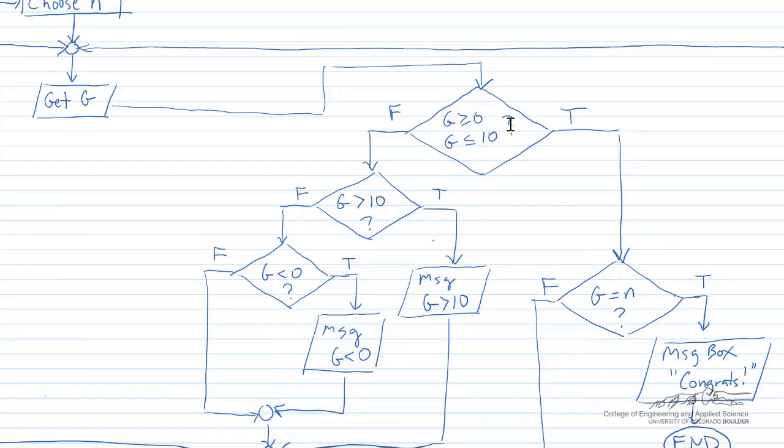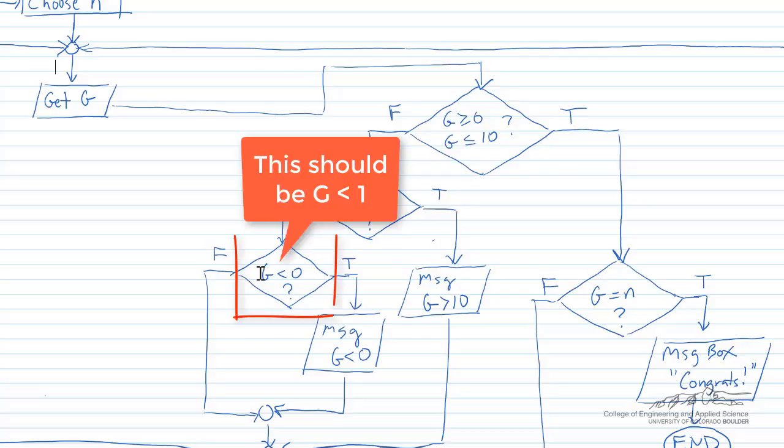If at least one of these conditions is false, then we're going to check which one is it. Is G greater than 10? If that's true, then we're going to message box, maybe something like invalid entry, your guess is greater than 10. Otherwise, if it's false, then we check to see if G is less than 0.